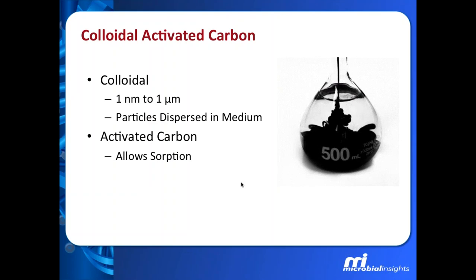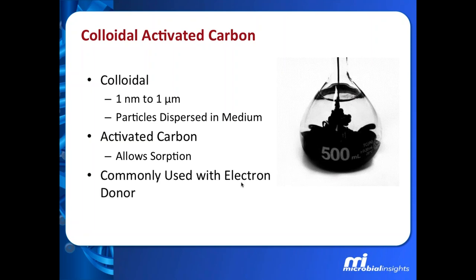Just to be sure everyone is on the same page — when we're talking about these colloidal activated carbon products, we're referring to the size of the carbon molecule. The activated carbon here is about a nanometer to a micrometer in size, so very small molecules. These colloidal particles are dispersed through some type of medium so that we can get good distribution into the environment. The key is these activated carbon particles allow for absorption of contaminants to these colloids, giving us a really quick lowering of our aqueous phase concentration. Then the interesting question is: can we use that with different electron donors or acceptors to really biodegrade and get contaminant destruction?